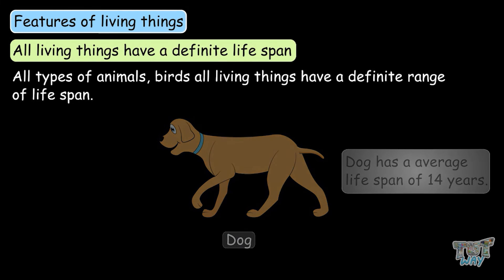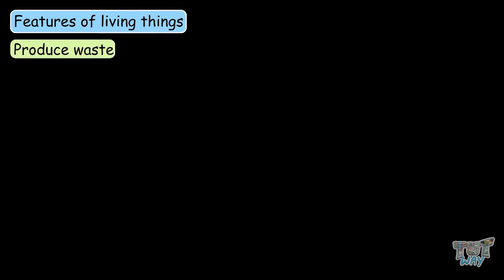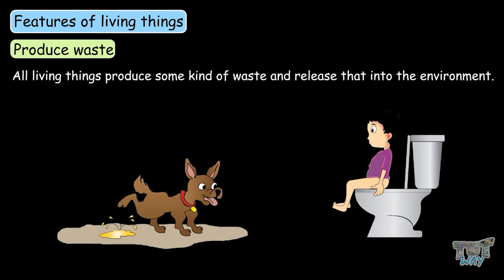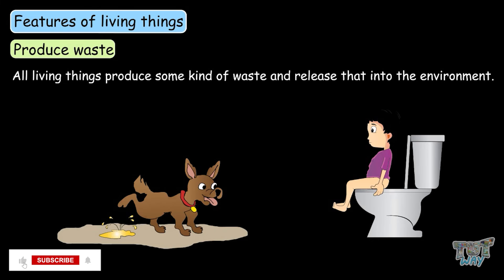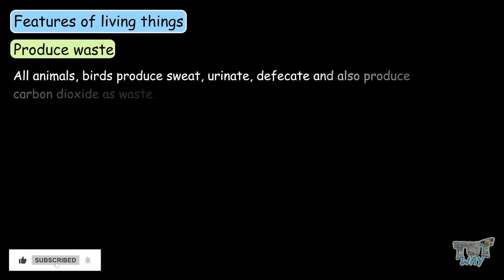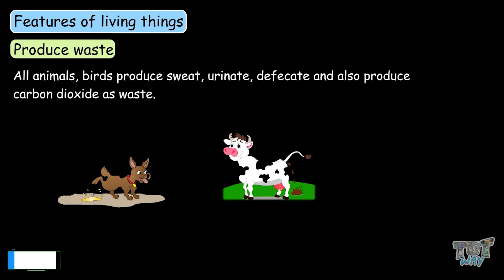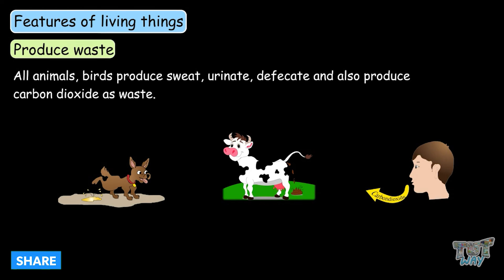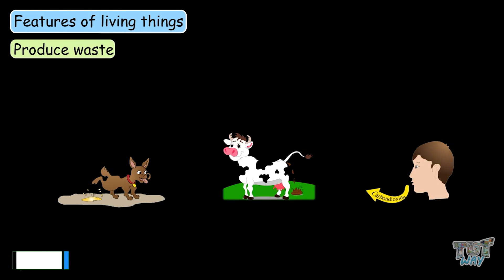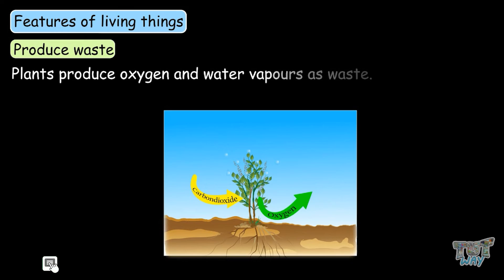The next characteristic is that they produce waste. All living things produce some kind of waste and release it into the environment. All animals and birds produce sweat, urinate, defecate, and produce carbon dioxide as waste. Plants produce oxygen and water vapors as waste.